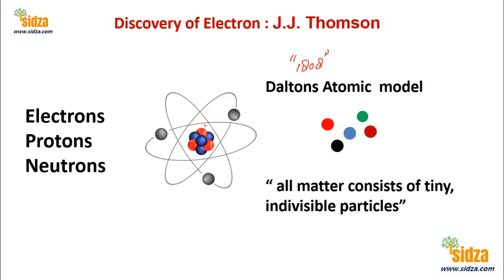He called an atom an indivisible particle. But later on, different people found that an atom can be broken into smaller particles, which means an atom actually consists of subatomic particles like electrons, protons and neutrons. These fundamental particles were discovered at different points in time, and the first fundamental particle discovered was the electron. It is J.J. Thomson who actually discovered the electron, finding that the atom contains a negatively charged particle called the electron.